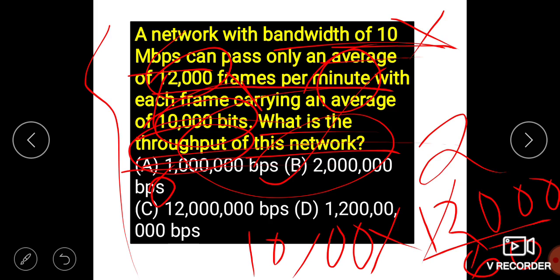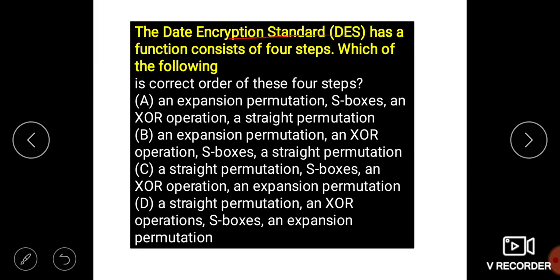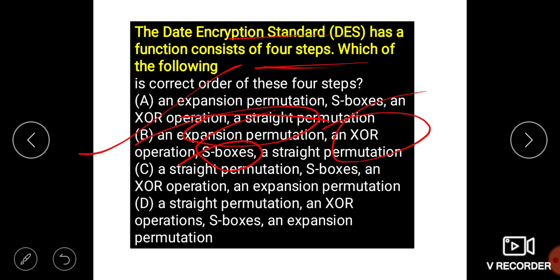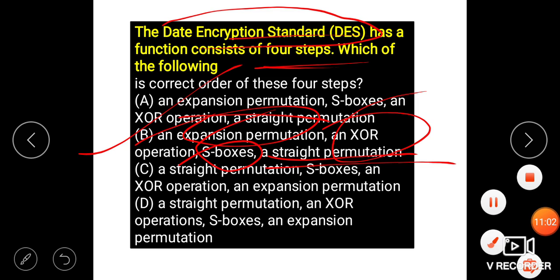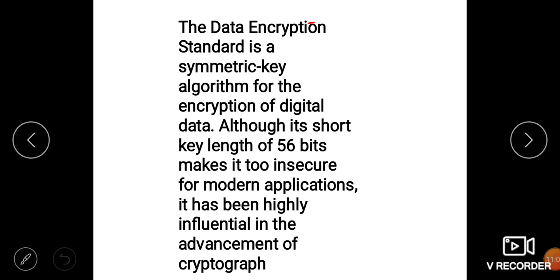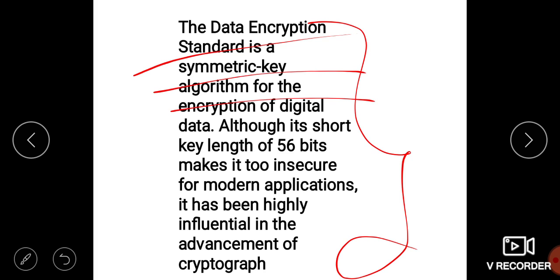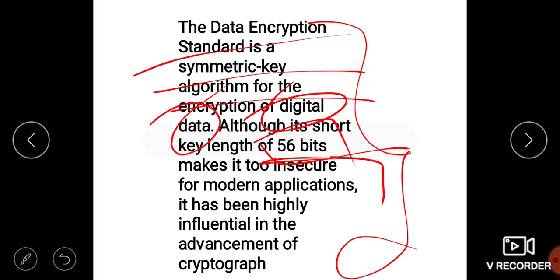For DES (Data Encryption Standard), there are four steps: first is expansion, then XOR operation, then S-box substitution, then straight permutation. DES is used in cryptography algorithms. It encrypts and keeps digital data secure using a 56-bit key, which is important to remember.